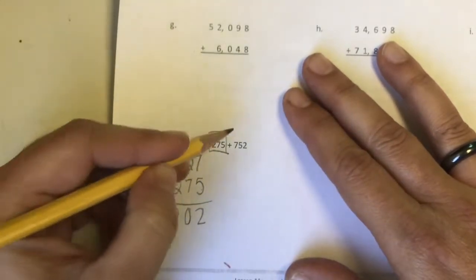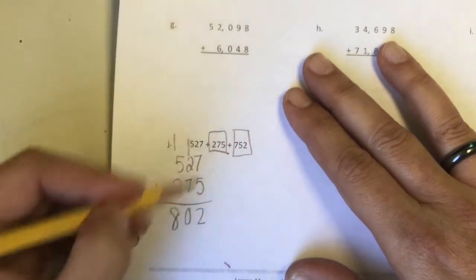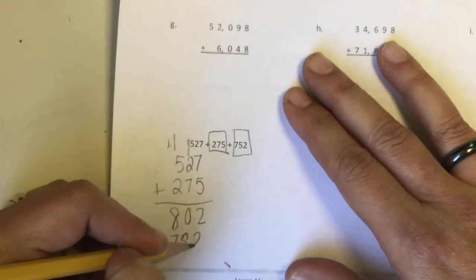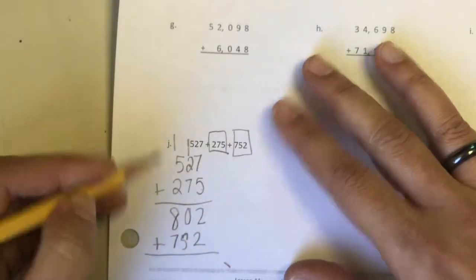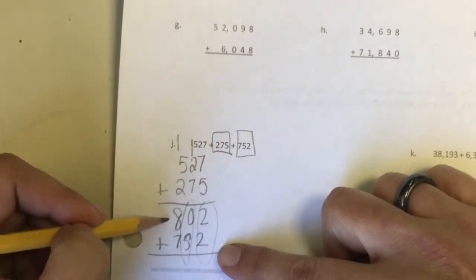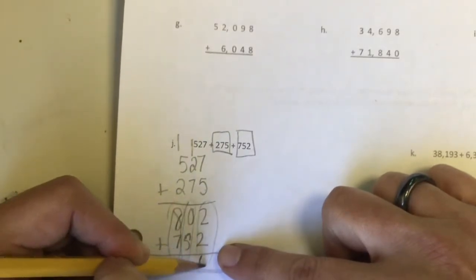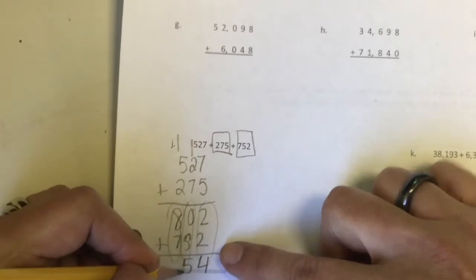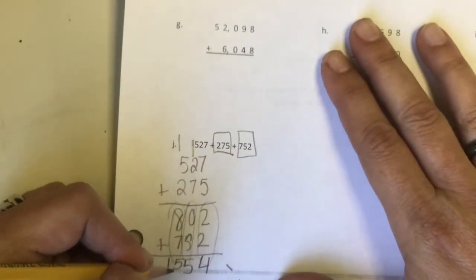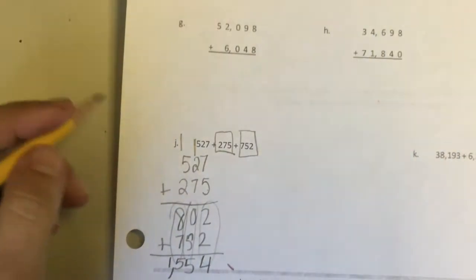But I'm not done yet, so now I need to add in my third number. Make sure that I have the ones place lined up, the tens place lined up, and the hundreds place lined up. And you're going to want to double check to make sure you get the same answer.